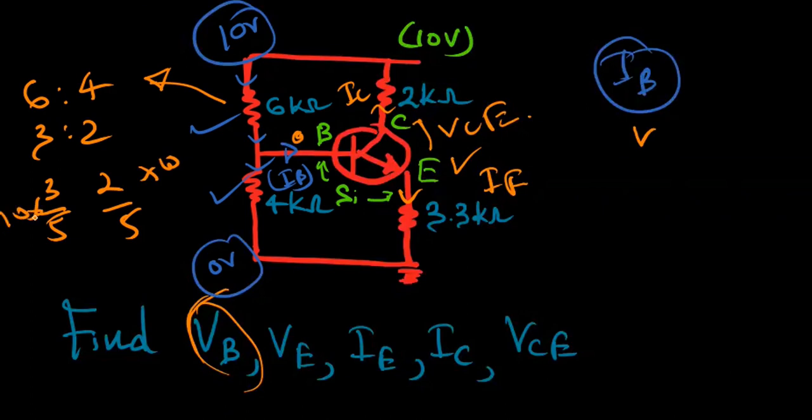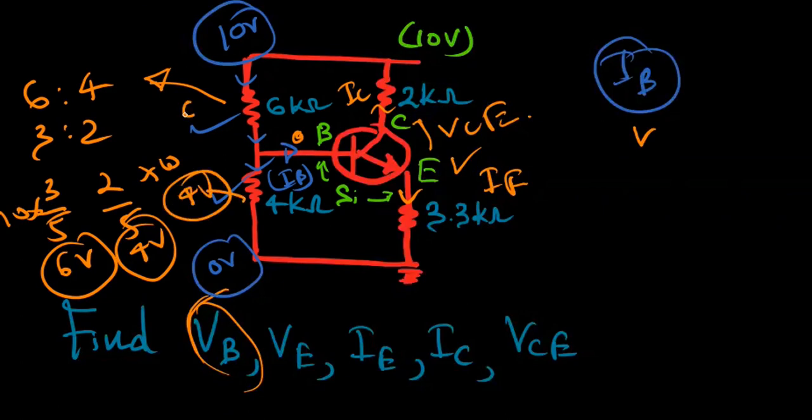So here we get 6 volts and here we get 4 volts. The 4 kilo ohms will keep 4 volts and this will keep 6 volts. Potential here is 0, the difference is 4, so the potential at B has to be 4 volts. Therefore VB is 4 volts.